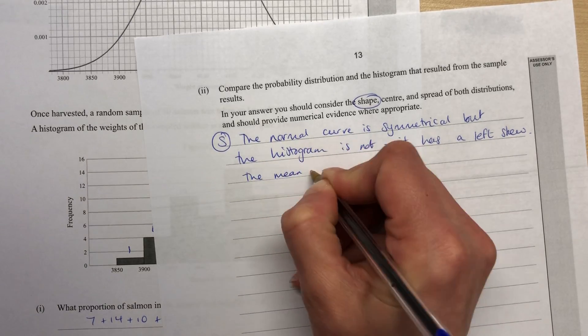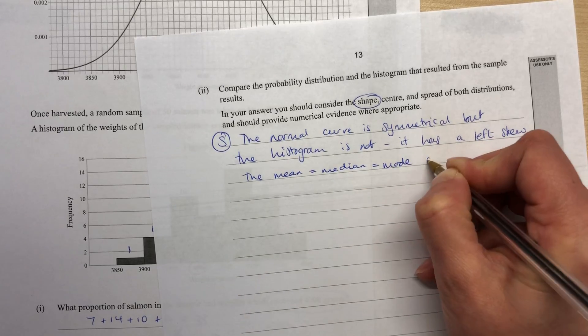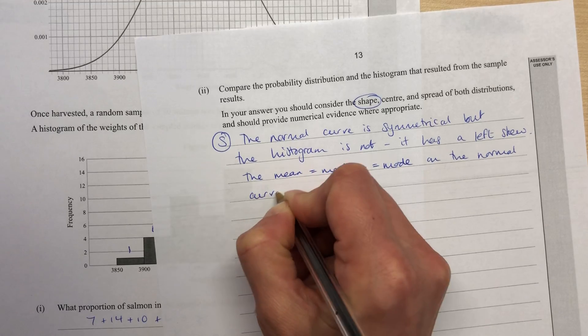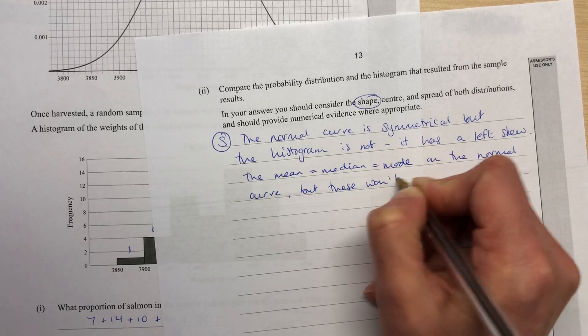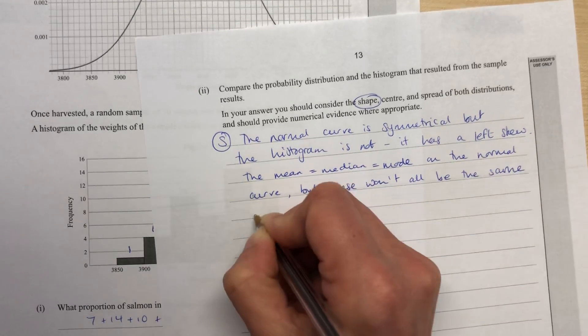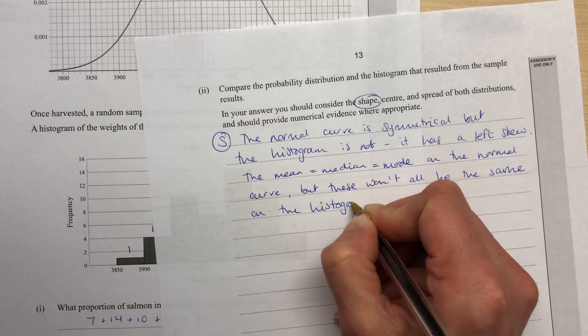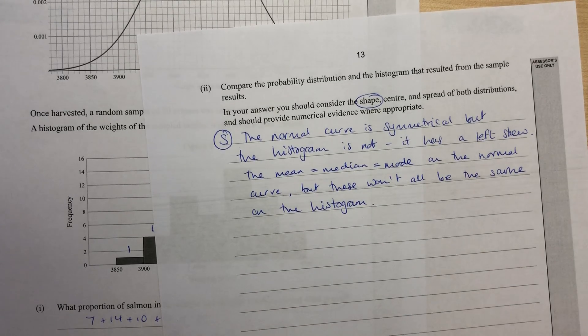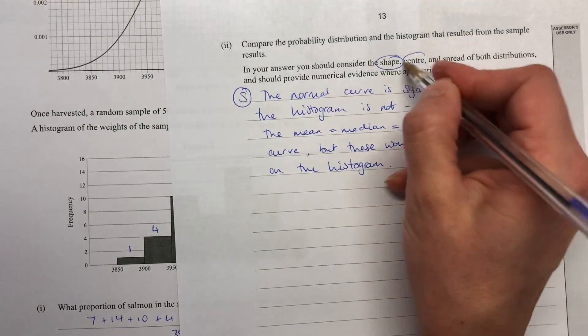Other things we might want to say about the shape are that the mean equals the median equals the mode on the normal curve. But these won't all be the same on the histogram, because it's not symmetrical. And you could actually calculate that as one of your calculations that you want to do. I'm not going to, because I think there are some easier calculations that don't take quite so long.